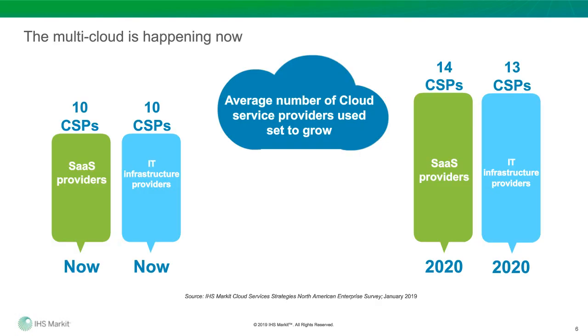Some might say this is marketing hype around the multi-cloud, but results from our latest Edge Connectivity Survey show that in 2018, enterprises were already using 10 different cloud service providers for SaaS and 10 different infrastructure providers, and they expect that to grow over the next two years. I've been asking this question for four years in a row, and every year the numbers keep growing. The multi-cloud is happening now, and the requirement for managing all of it is already in play.